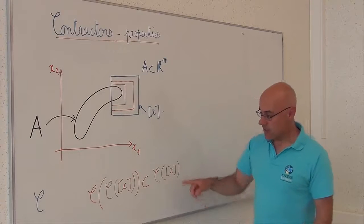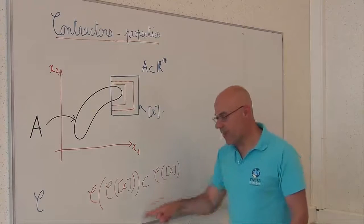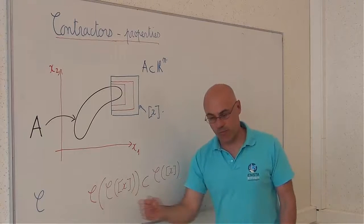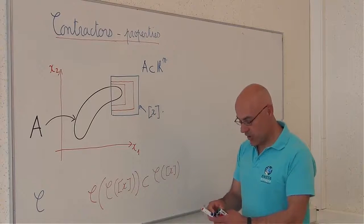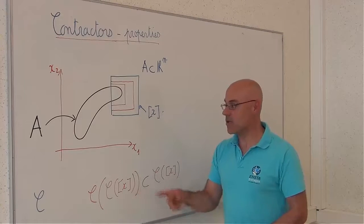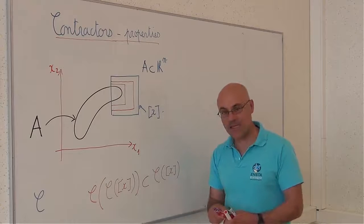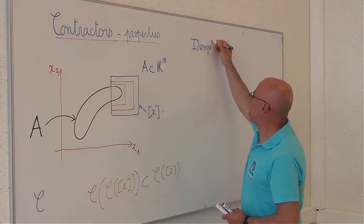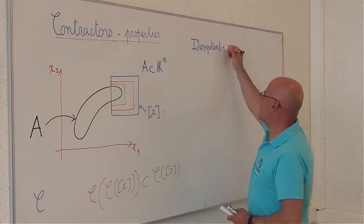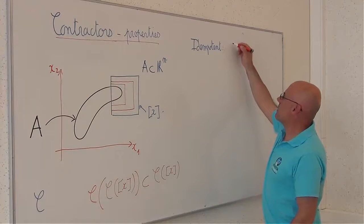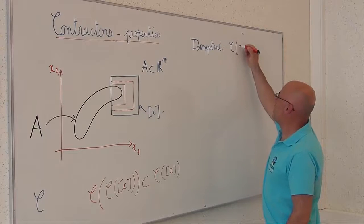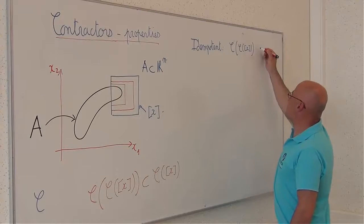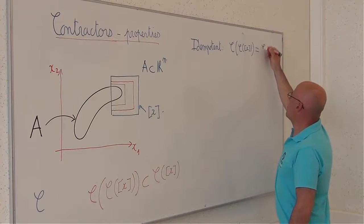Of course, sometimes, if I apply them several times, I will get no improvement. In such a case, we will say that the contractor is idempotent. So, idempotent, what does it mean? It means that C of C of X is equal to C of X.